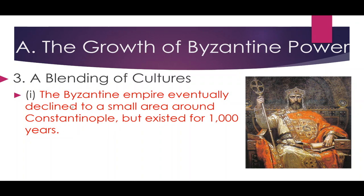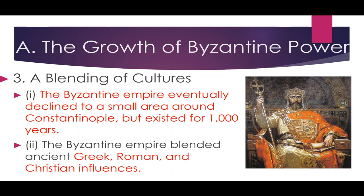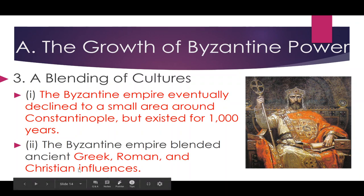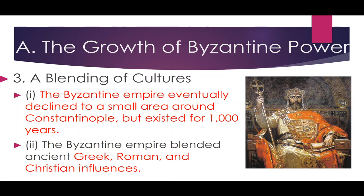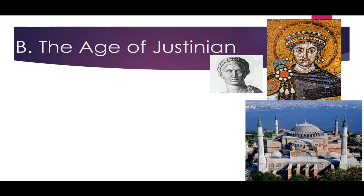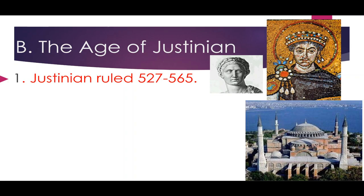Eventually the Byzantine Empire started to decline, shrinking until it was really just the city of Constantinople itself. But this city lasted for over a thousand years, flexing in size at different times. Christianity was a huge component of its culture, and the Eastern Orthodox Church remains a very large church in Eastern Europe and Russia today. The greatest emperor in Constantinople was Justinian, who ruled from about 527 to 565 AD.